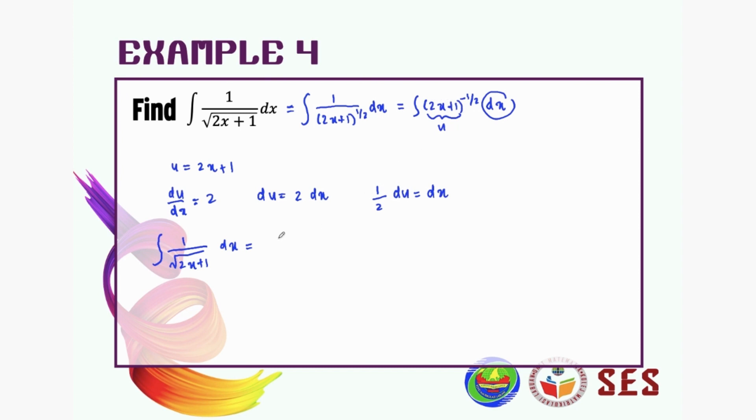This is our u, so u to the power of negative 1/2. And dx is equal to 1 over 2 du. Like the previous question, we can bring our constant to the front.